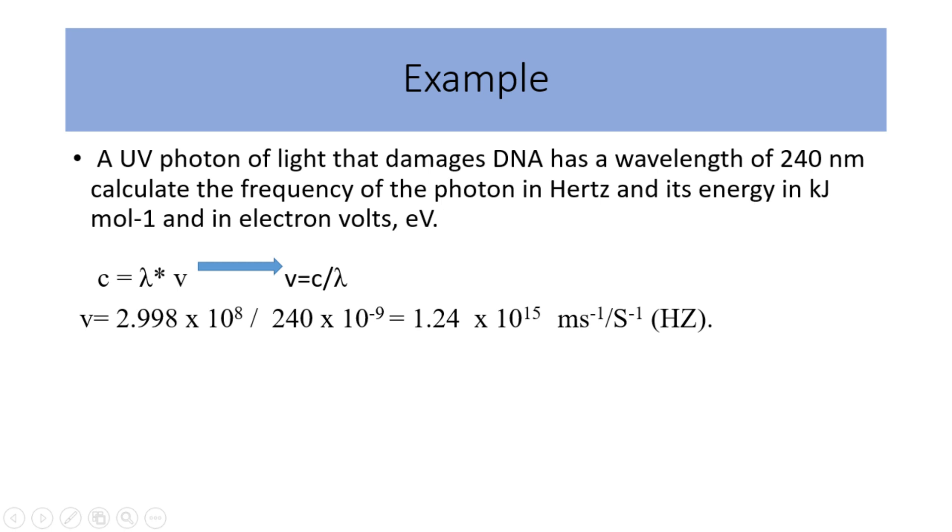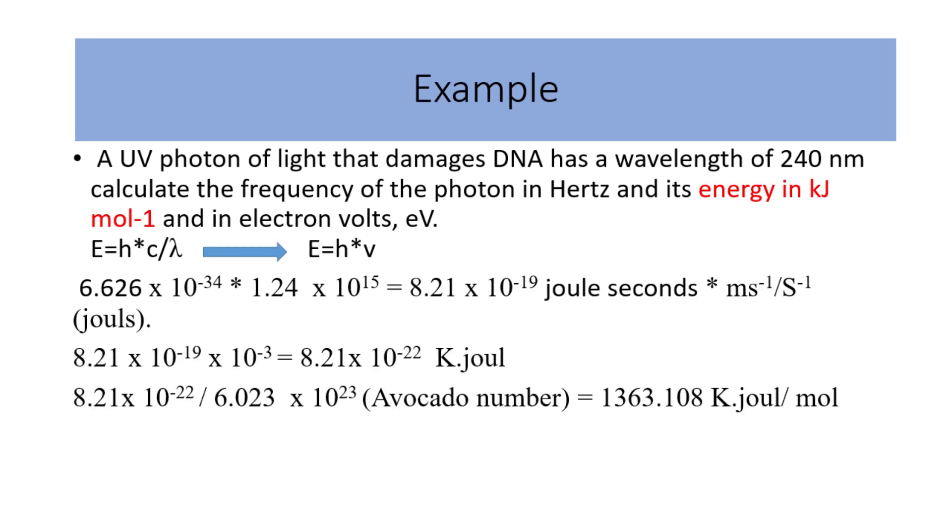Secondly, to calculate the energy, we have the formula. Energy equals Planck's constant times the speed of light divided by wavelength, or E is equal to h multiplied by c and divided by lambda. We also know that nu is equal to c divided by lambda. So, E is equal to h multiplied by nu. The Planck's constant is 6.626 times 10 to the power of negative 34 multiplied by nu value 1.24 times 10 to the power of 15 equals 8.21 times 10 to the power of negative 19. So the unit here is joule seconds for Planck's constant and per second for nu, which equals joules. To convert it into kilojoules per mole, we should multiply by 10 to the power of negative 3 to get the value in kilojoules and divide by the Avogadro number 6.023 times 10 to the power of 23 to get the value in kilojoules per mole. As you see, it equals 1363.108 kilojoules per mole.